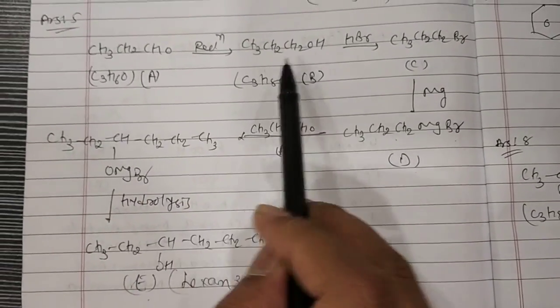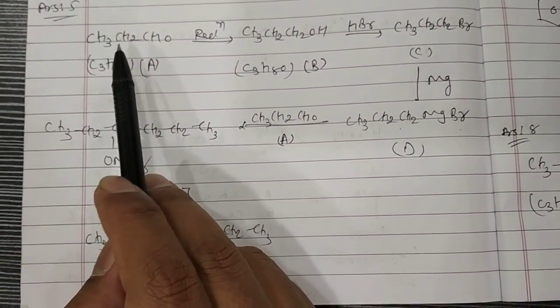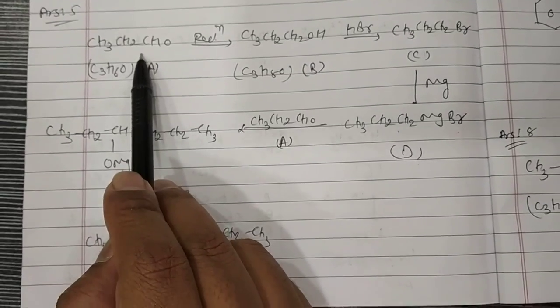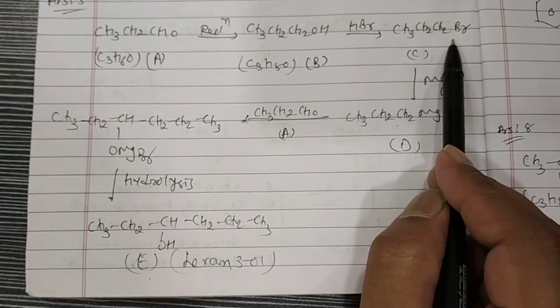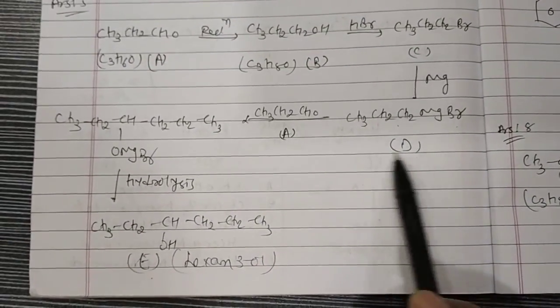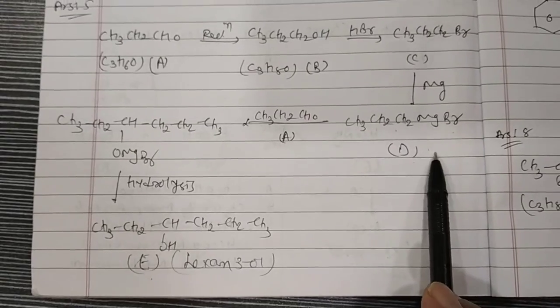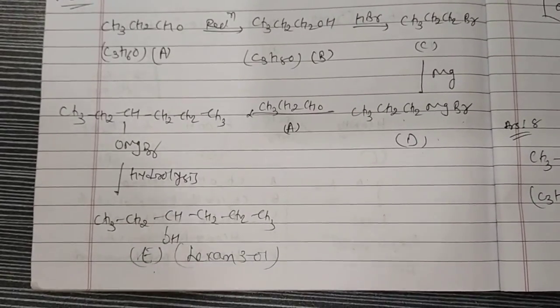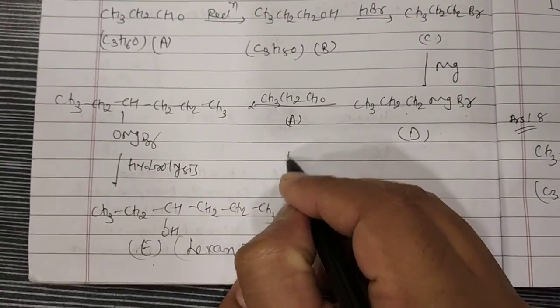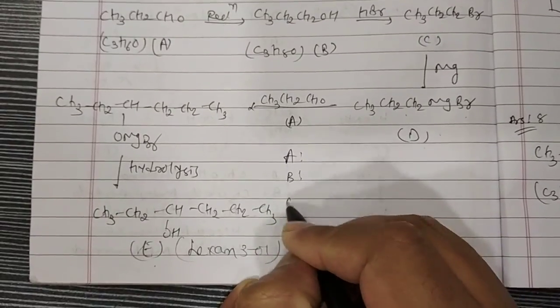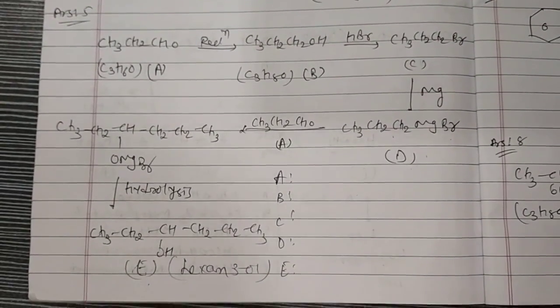When D reacts with A you get the intermediate of Grignard reaction, and on hydrolysis you get E that is hexan-3-ol. So this is statement number 5: A undergoes reduction to get primary alcohol. A can also oxidize but we don't do oxidation. Oxidation would give COOH. This undergoes HBr to get bromine species. Then Mg gives MgBr. D is Grignard reagent which reacts with A, and on hydrolysis you get hexan-3-ol. So write A, B, C, D, E. This is all about statement number 5.